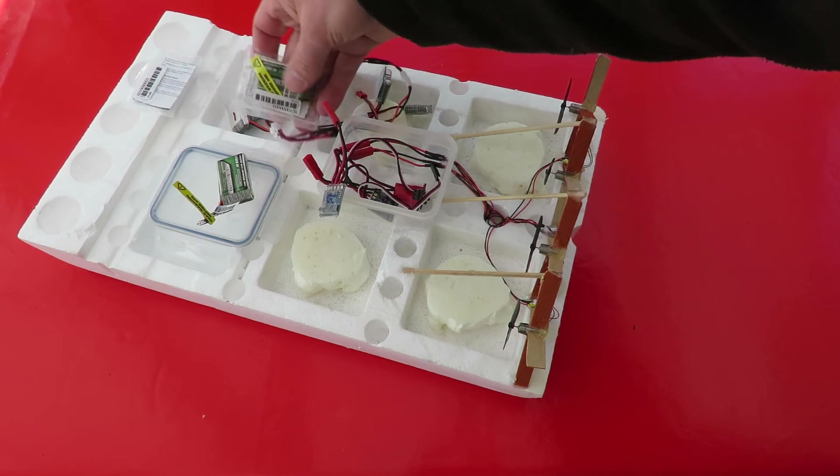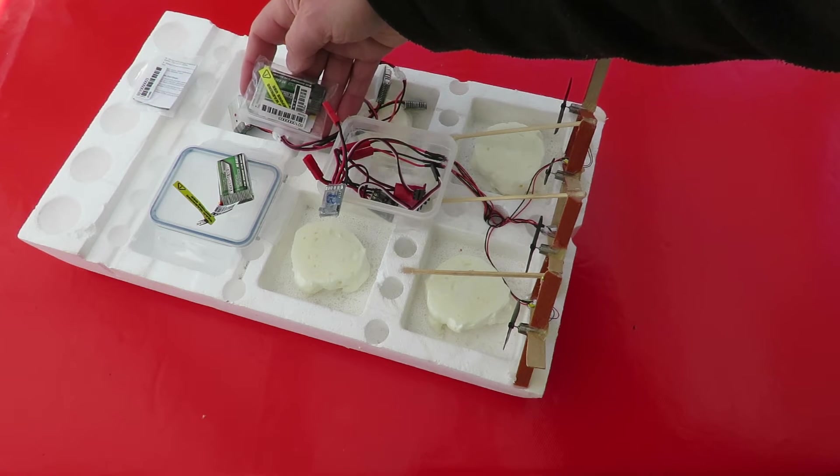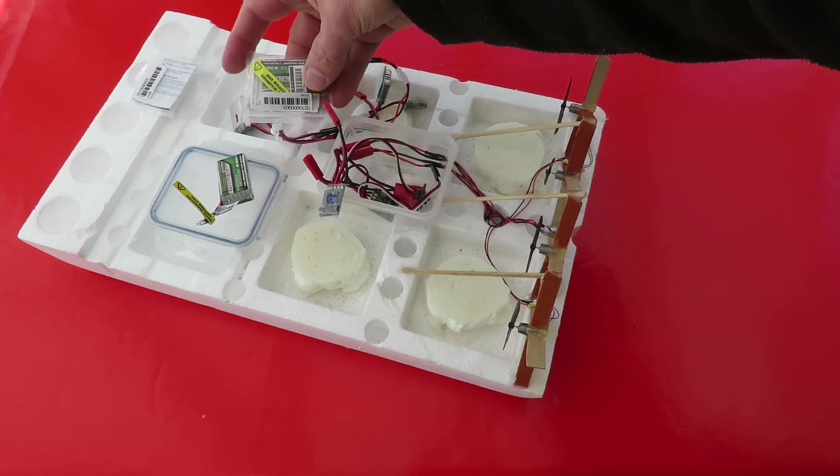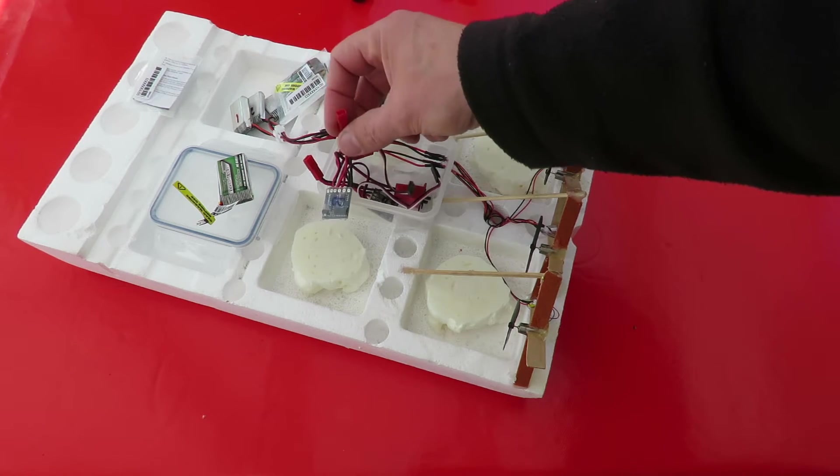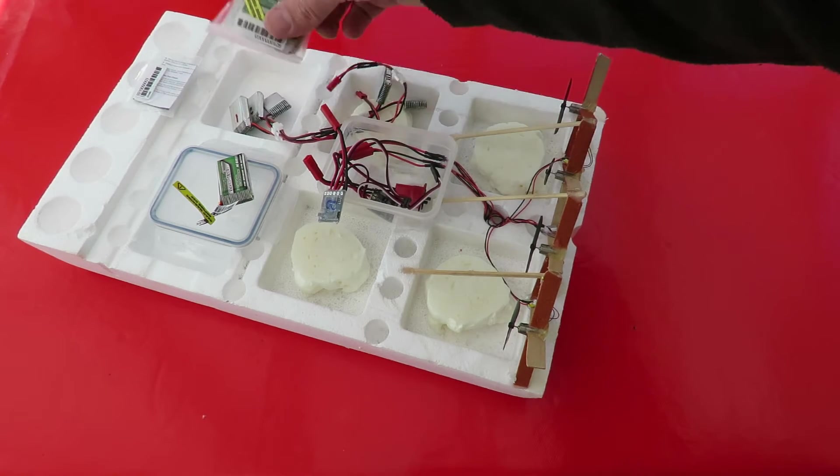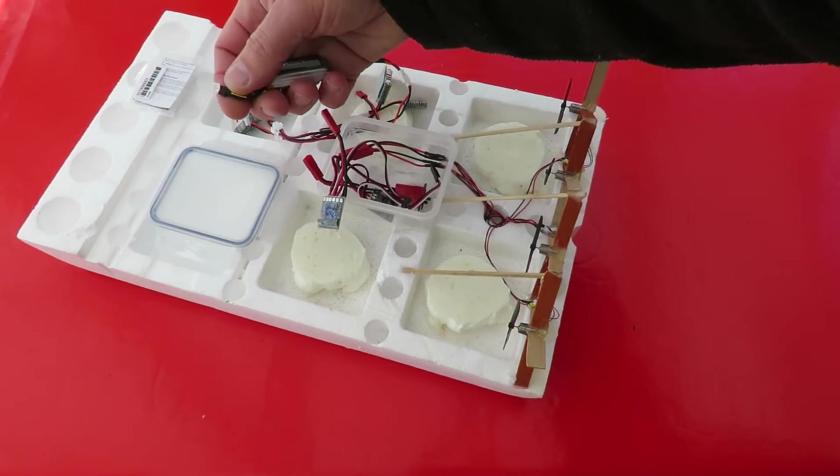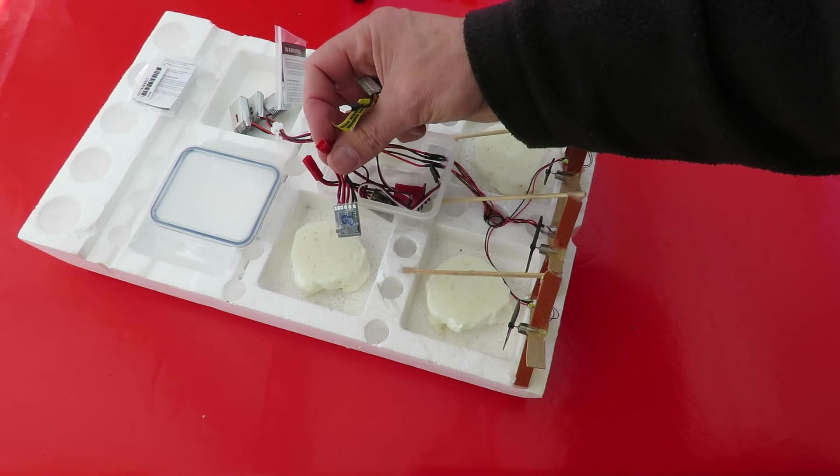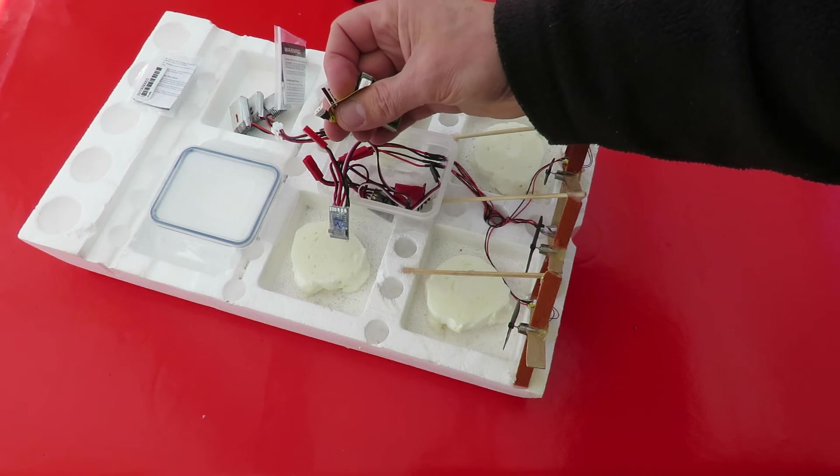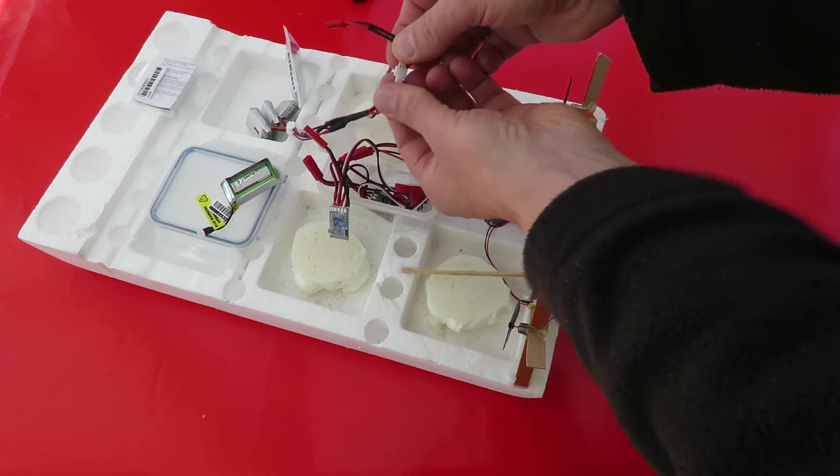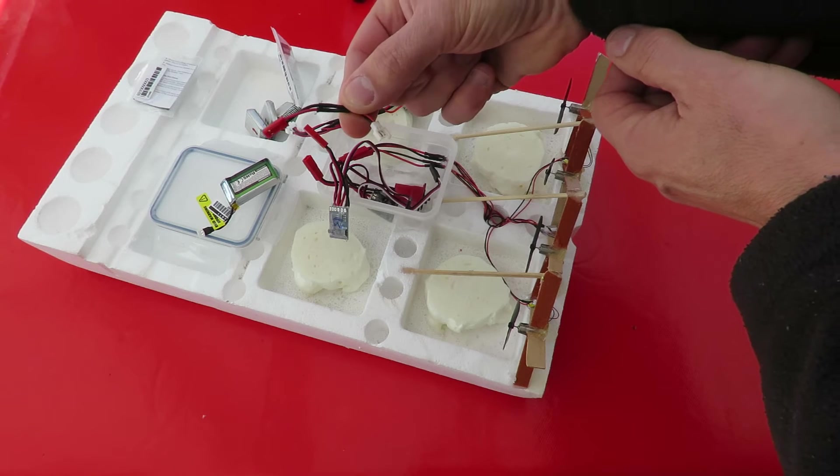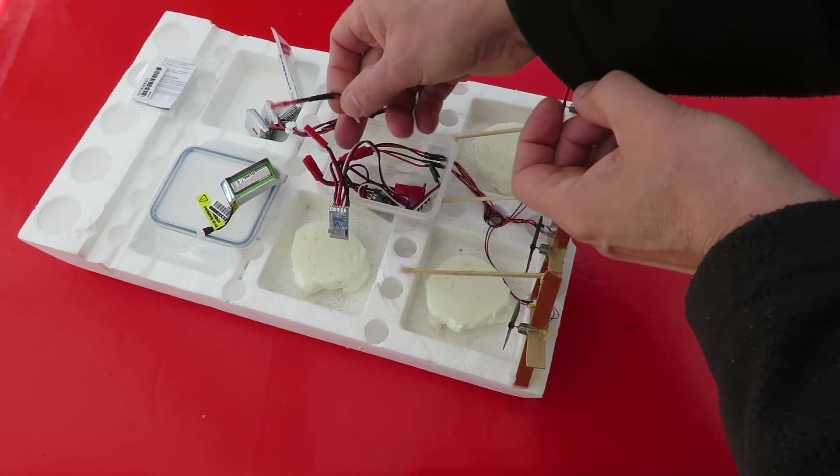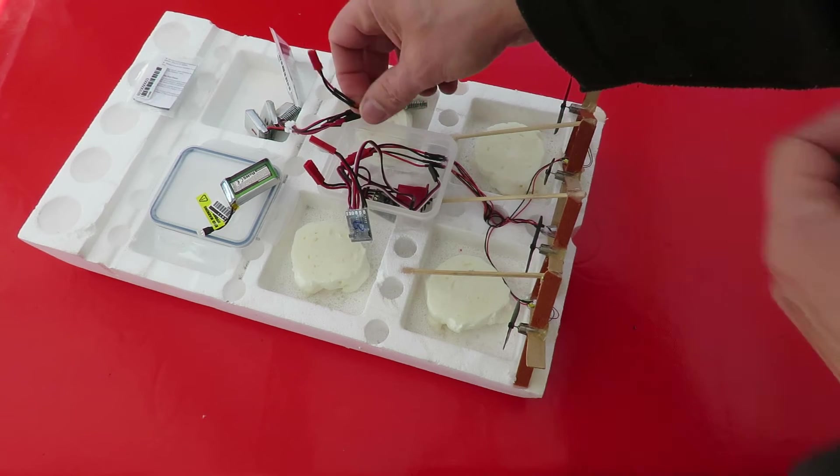And what I want to do is run them from these two new LiPos, one for each ESC. So I need to make up some leads because I need to be able to convert from that sort of plug to that sort of plug. I've done it already with one of them but I'll make up another one so I can power each ESC separately.